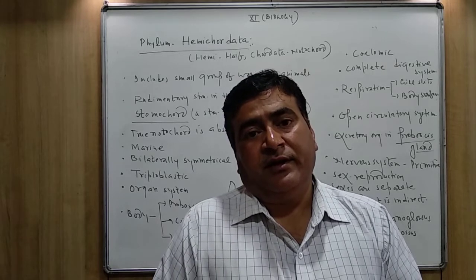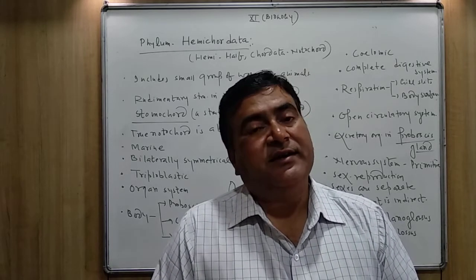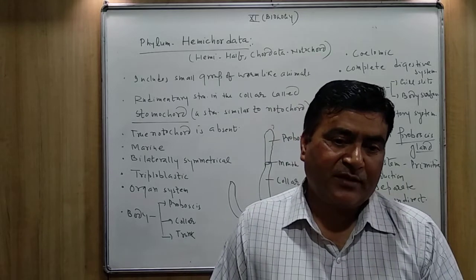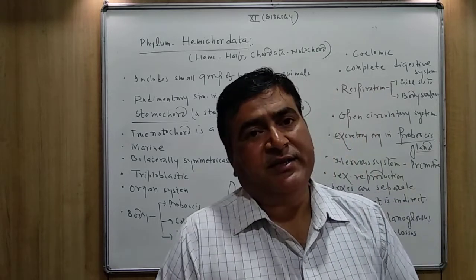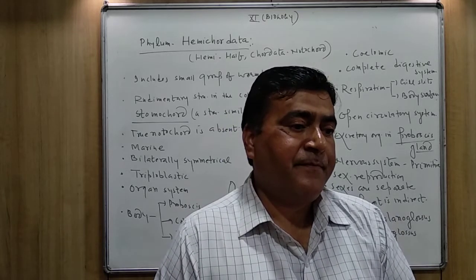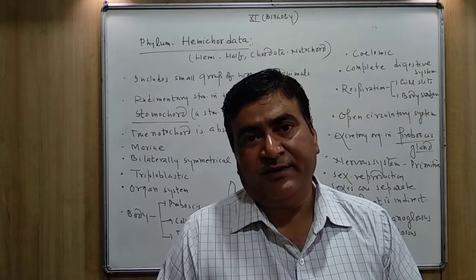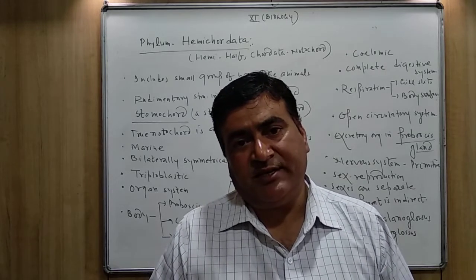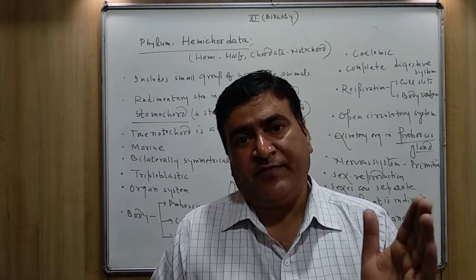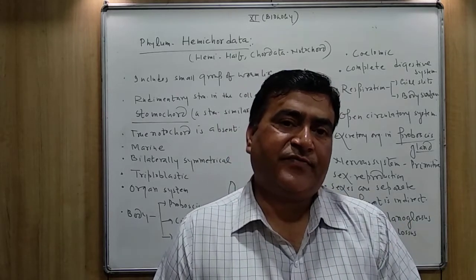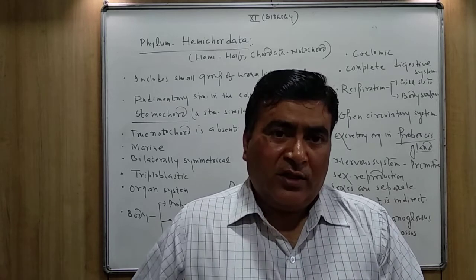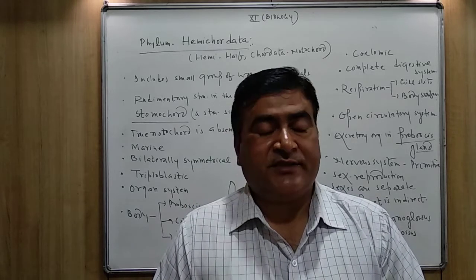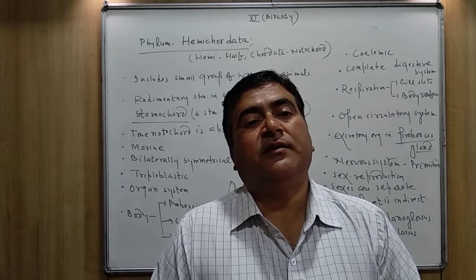In all chordates, the post-anal tail is also present. Hemichordata can be said to be the connecting link between non-chordates and chordates. All the phyla from Porifera, Coelenterata, Platyhelminthes, Aschelminthes, Arthropoda, Mollusca, and Echinodermata — all these phyla from Porifera till Echinodermata — are said to be non-chordates because they don't have the notochord.